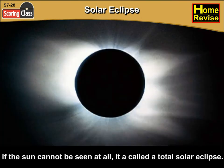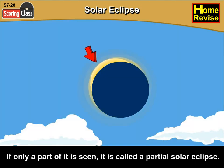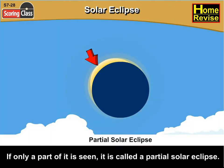If the sun cannot be seen at all, it is called a total solar eclipse. If only a part of it is seen, it is called a partial solar eclipse.